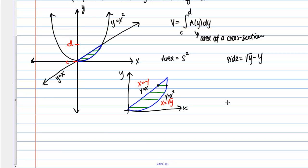So hopefully now you see why it makes sense that in this case we're going to be integrating with respect to y. So whenever your cross sections are perpendicular to the y-axis and you have to do right minus left, then you're going to be integrating with respect to y.